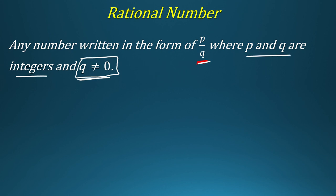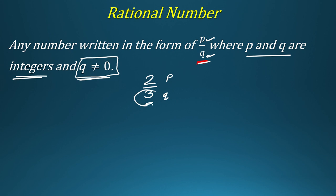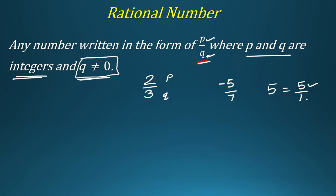P and Q are integers. So there are two conditions: numerator and denominator both must be integers, and denominator should not be equal to 0. For example, 2 over 3 is a rational number because it is in the form P over Q, Q is not equal to 0, and both 2 and 3 are integers. Similarly, -5 over 7 is also a rational number. And 5 is also a rational number because 5 can be written as 5 over 1, satisfying all the conditions.